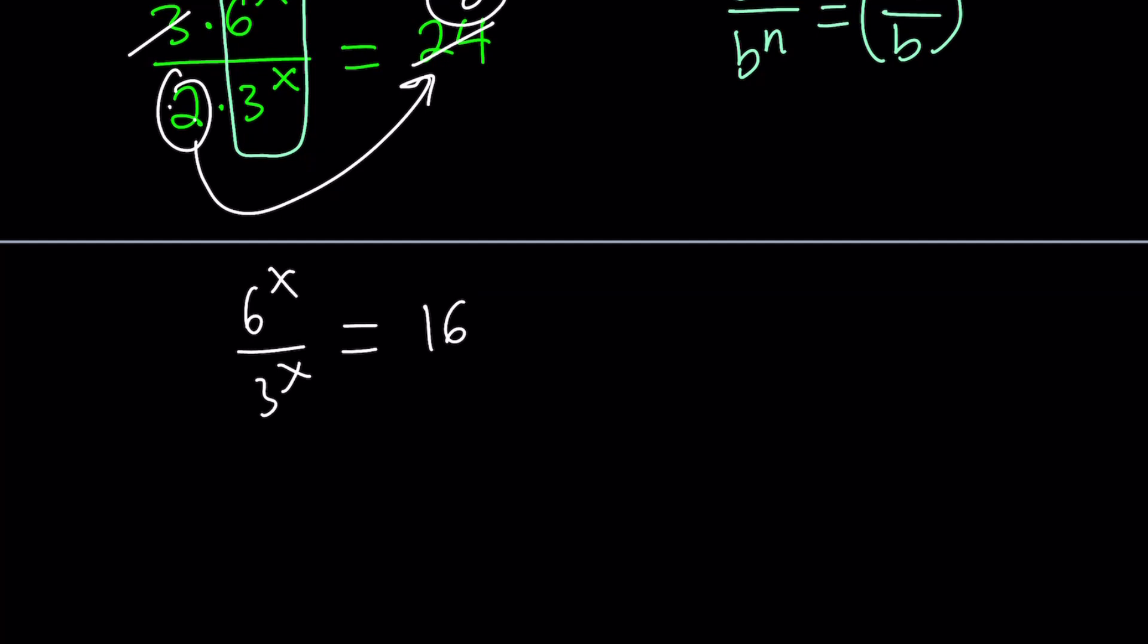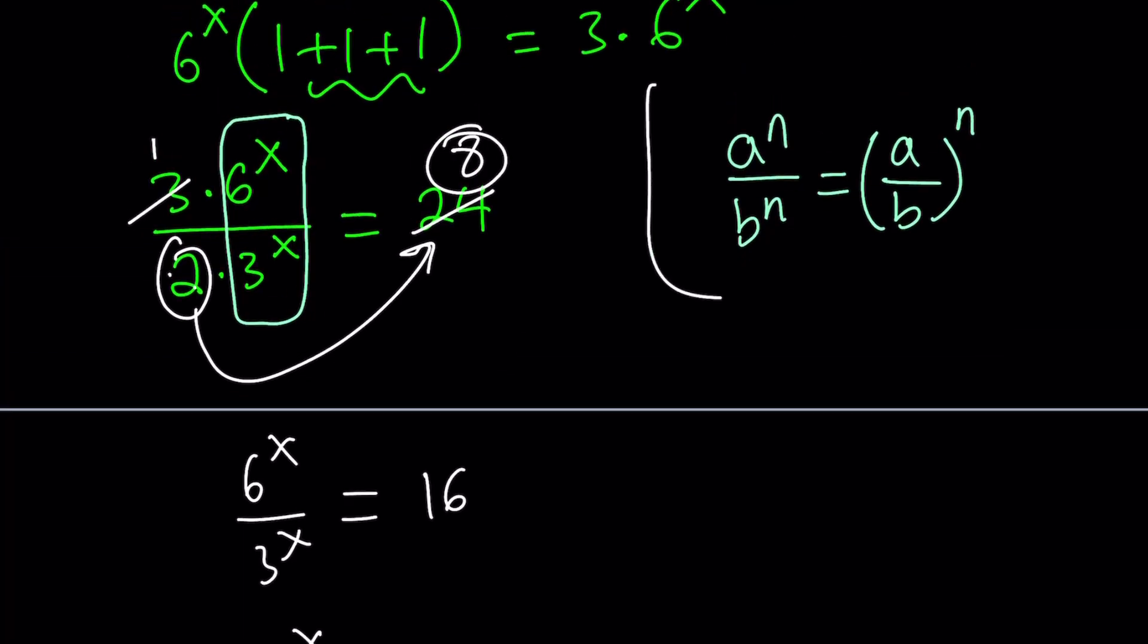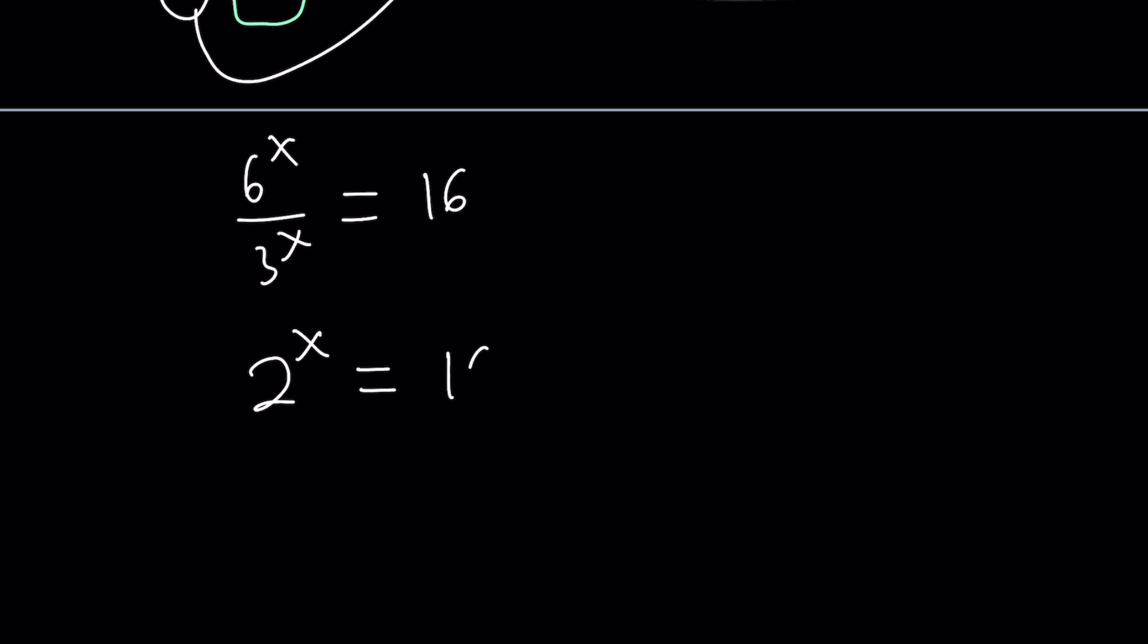Now let's focus on 6^x divided by 3^x. That is 2^x using our property. So 2^x equals 16. Wow, that was easy.